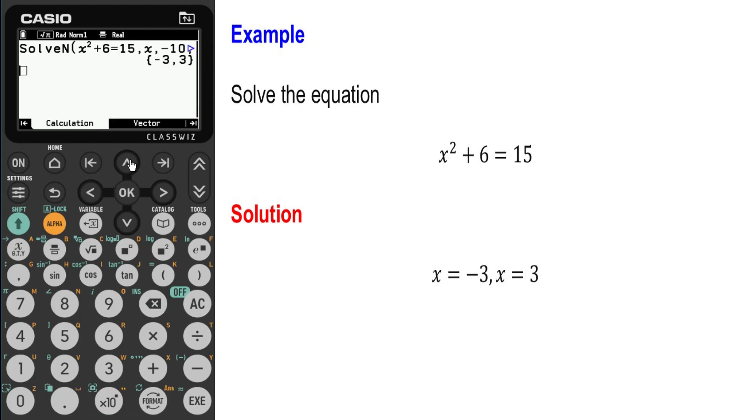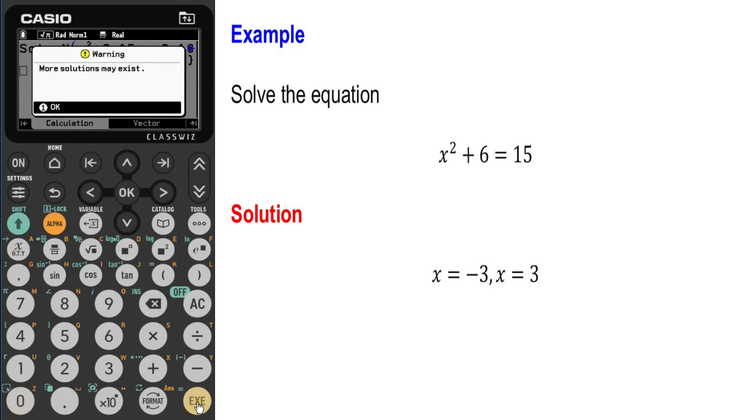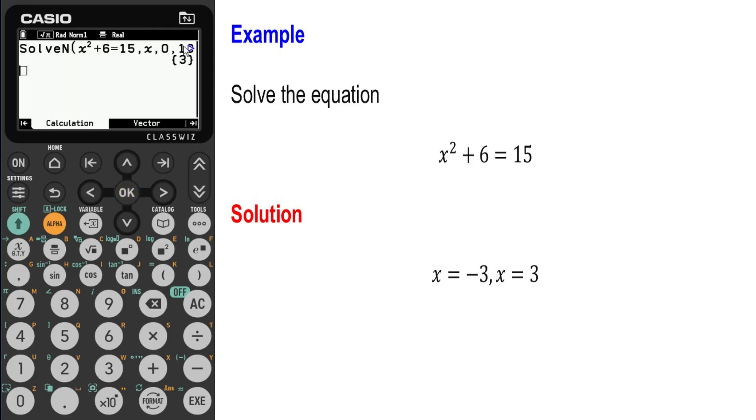Now let us go back. What would happen if I had my lower limit being zero instead? When I come to execute, this popup appears which tells us more solutions may exist and if I press ok, this time it only found the solution of x equals three.